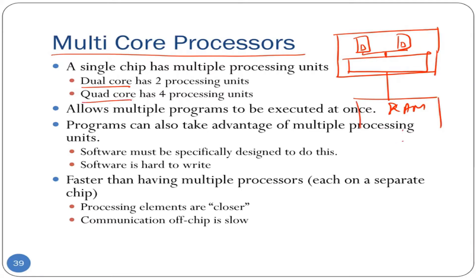Similarly, if you have a quad core processor, that means on a single chip we have integrated four fully functional CPUs along with their caches and cache controllers. Essentially, a multi-core processor allows for true parallelism. If you have a quad core processor, you can execute four processes simultaneously in parallel. Recall that this is different from the illusion of concurrency that an operating system may provide even on a single core unicore uniprocessor machine — this is true parallelism.